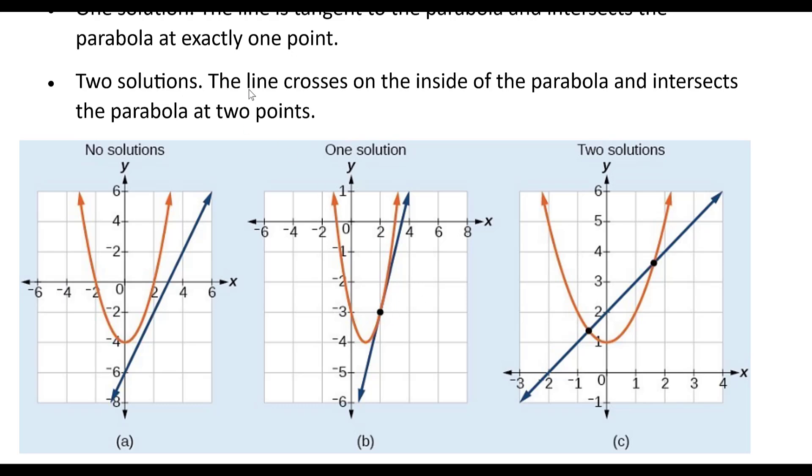You could have two solutions where the line crosses on the inside of the parabola and intersects the parabola at two points. This is the third case here.